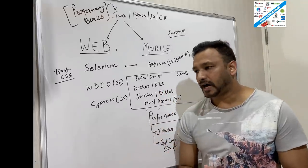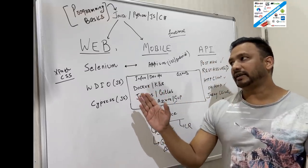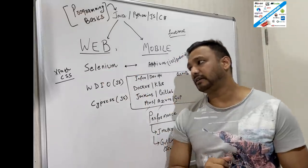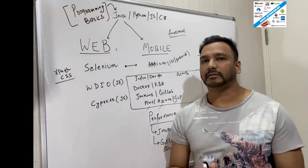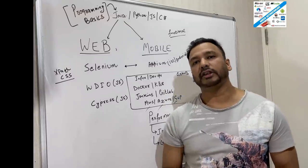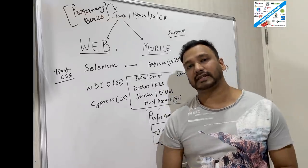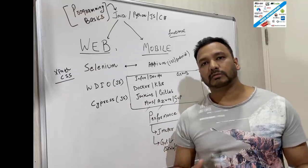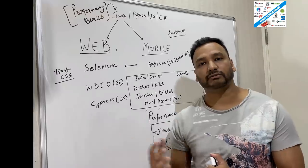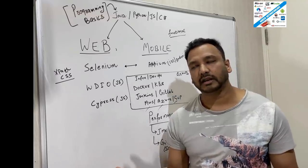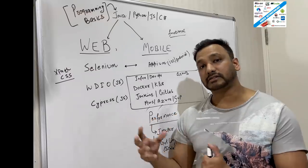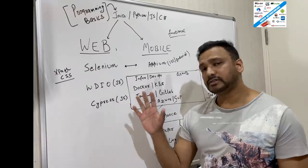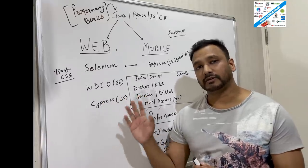So programming is compulsory. I've divided the tech stack into three parts: one is web, second is mobile, and then API. In the web, there are a lot of tools available in the market. If you are very new in automation and want to start, I would strictly recommend that you start with web automation with Selenium, which is the most demanding tool available in the market. It has a history of around 15 years in the market. Selenium with Java, Selenium with Python — it's a really good combination. And you should know all the basics of Selenium. Once Selenium is done, maybe you can pick WebDriverIO and Cypress with respect to JavaScript.